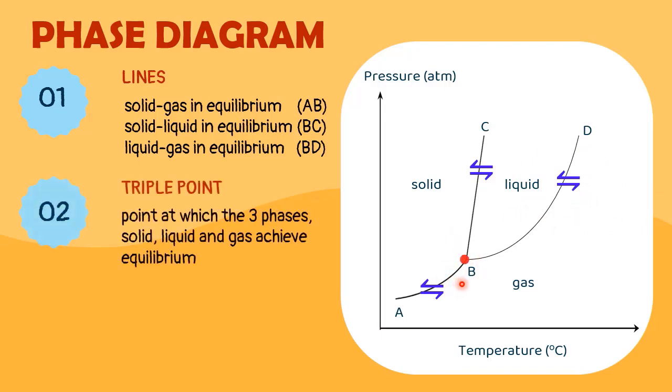Point B is called the triple point. This point represents the combinations of pressure and temperature at which a pure substance can exist simultaneously as a solid, liquid or gas.